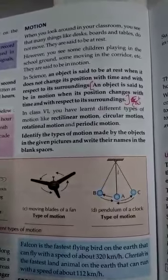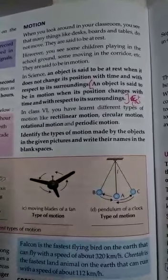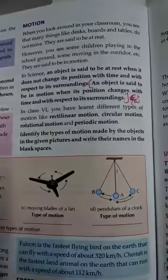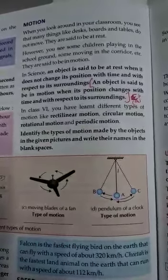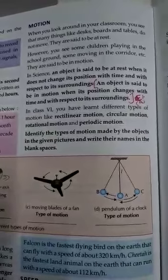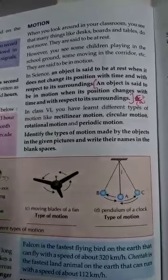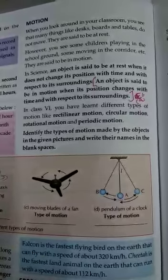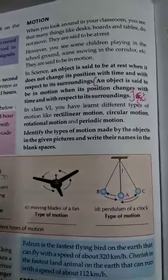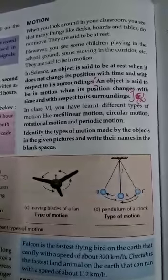Aisa object jab rest pe hota hai, to woh koi bhi position change nahi karta, lekin aisa object jab motion mein hota hai, to woh apni surroundings ke aas paas apni position ko change karta hai. In class 6, you have learned different types of motion, like rectilinear motion, circular motion, rotational motion, and periodic motion.